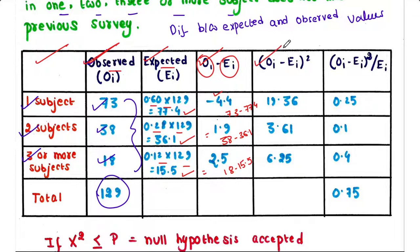Now in this column, we will just make the square. So minus 4.4 whole square equals 19.36. 1.9 whole square equals 3.61. 2.5 whole square equals 6.25.